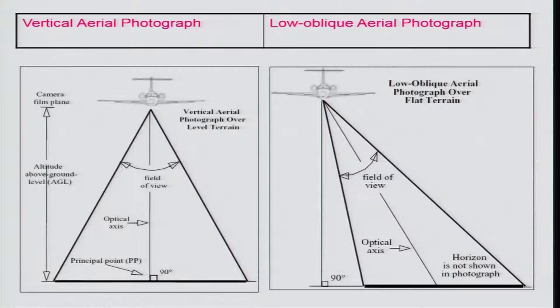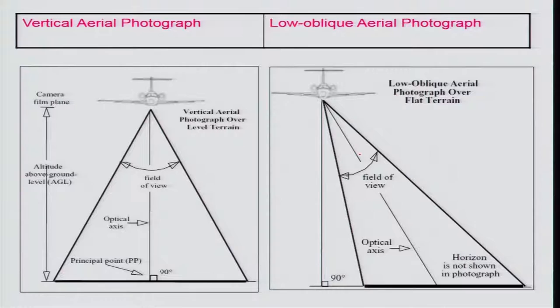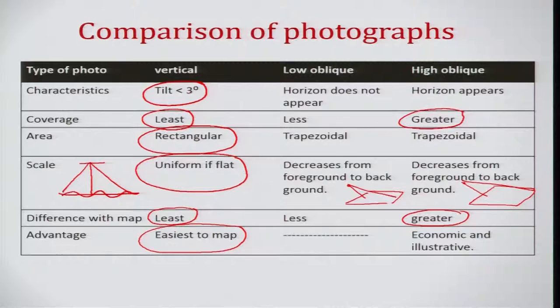For a vertical photograph over level terrain, the lens — the information collected by the camera — will be almost 90 degrees, which is what we call the principal point. The optical axis will be almost vertical with respect to the ground. In the case of low oblique aerial photographs over flat terrain, the axis will be inclined.